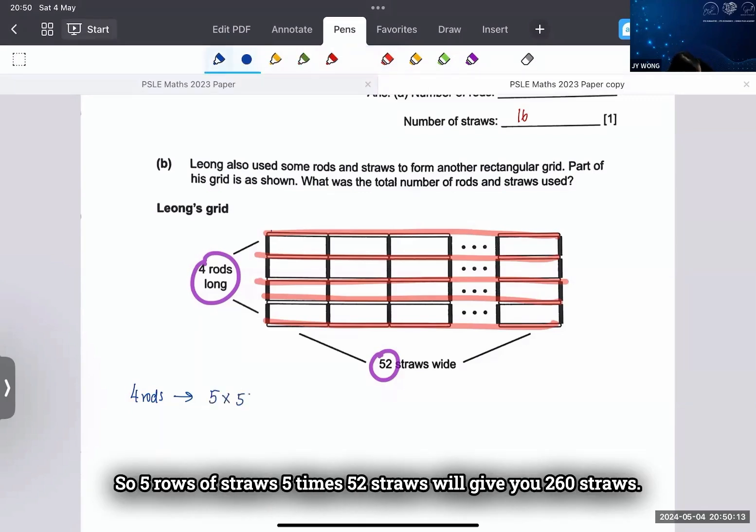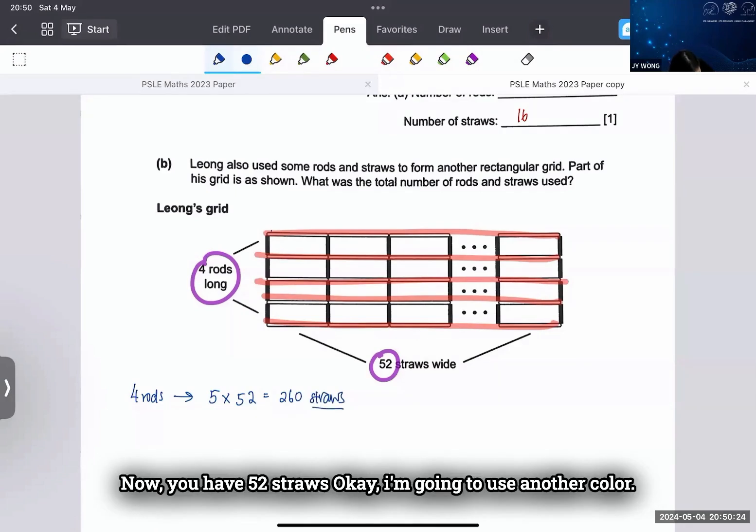Five times 52 will give you 260 straws. Now you have 52 straws. Okay, I'm going to use another color.